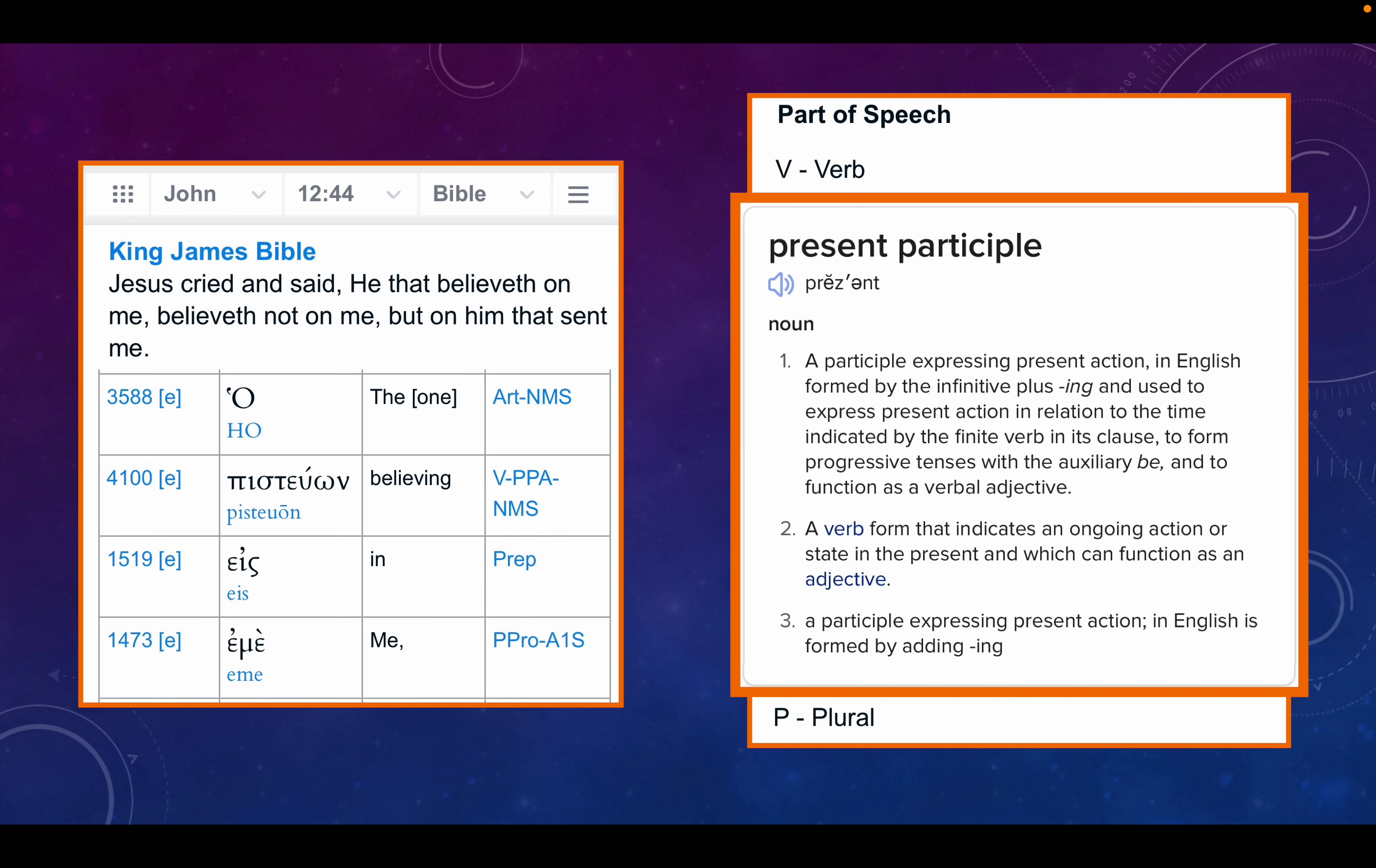John 12:44. Jesus cried and said, he that believeth on me, believeth not on me, but on him that sent me. O pisteon is eme, the one believing in me, present participle.